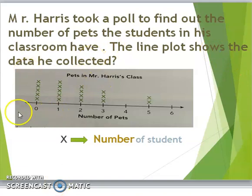This is our line plot. For example, we have 0, 1, 2, 3, 4, 5, 6, which represents the number of pets. And each x represents one student.